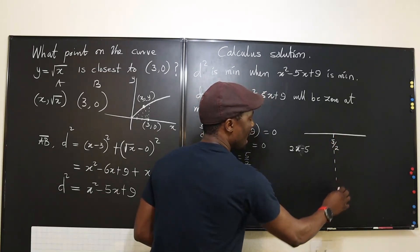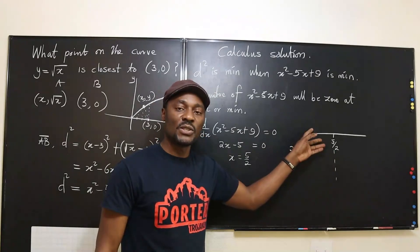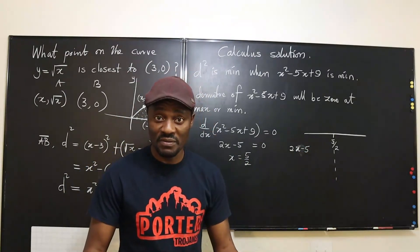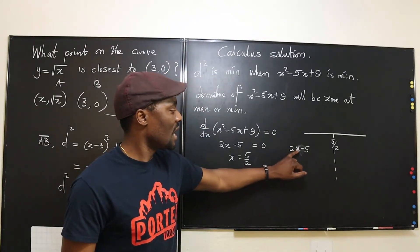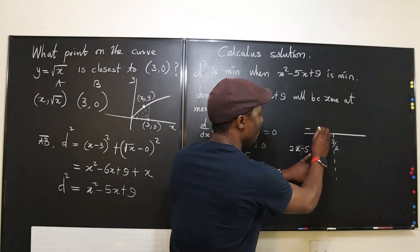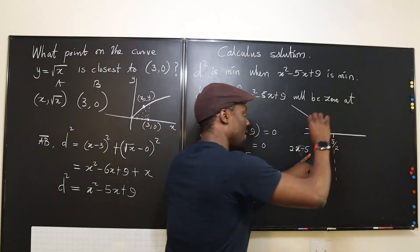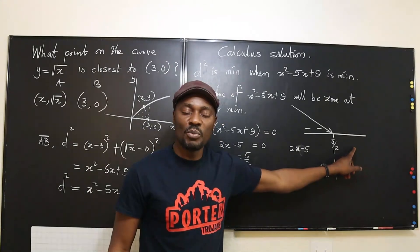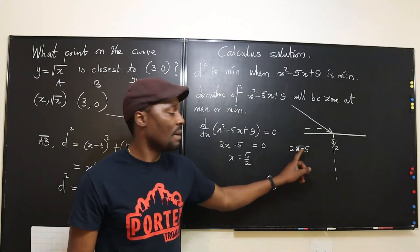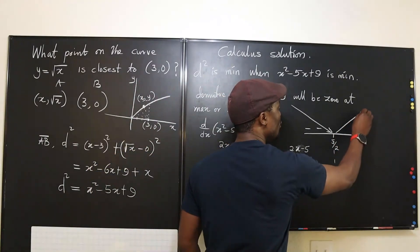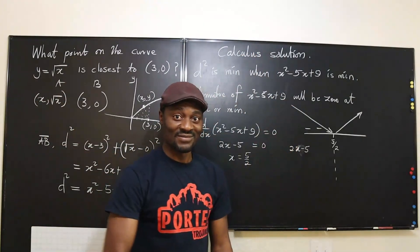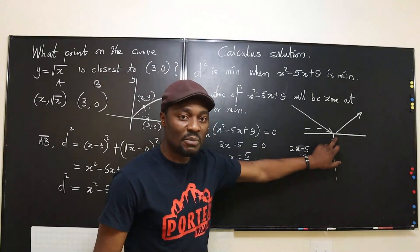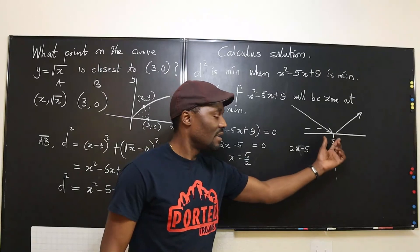Plugging in x = 2 (less than 2.5): 2(2) − 5 = −1, so the slope is negative — the curve is decreasing. Plugging in x = 3 (greater than 2.5): 2(3) − 5 = 1, so the slope is positive — the curve is increasing. The function goes down then up, confirming this is a minimum point.